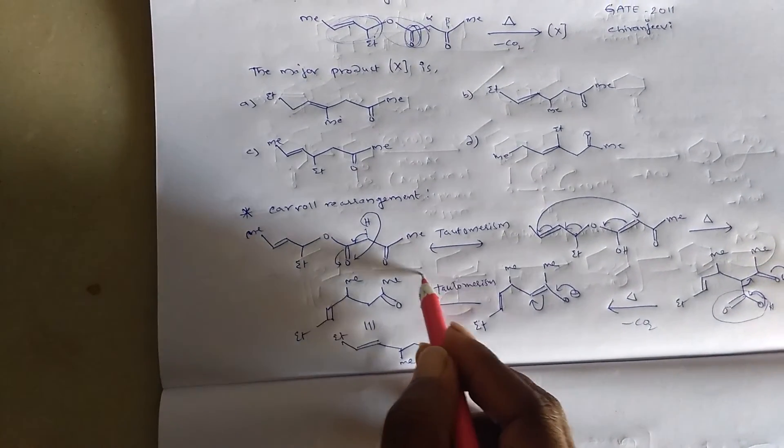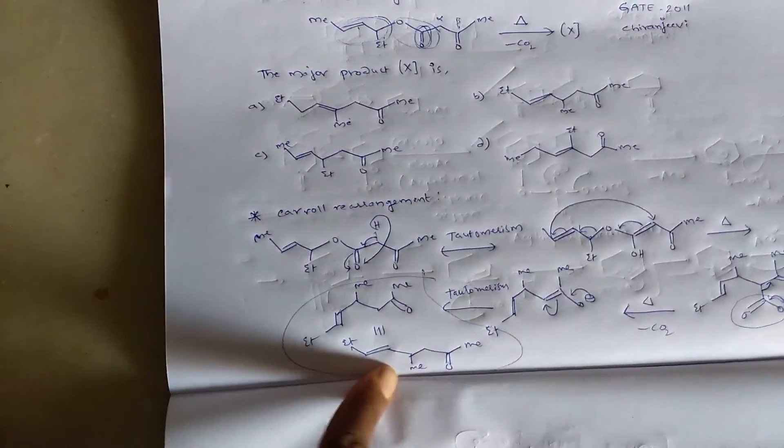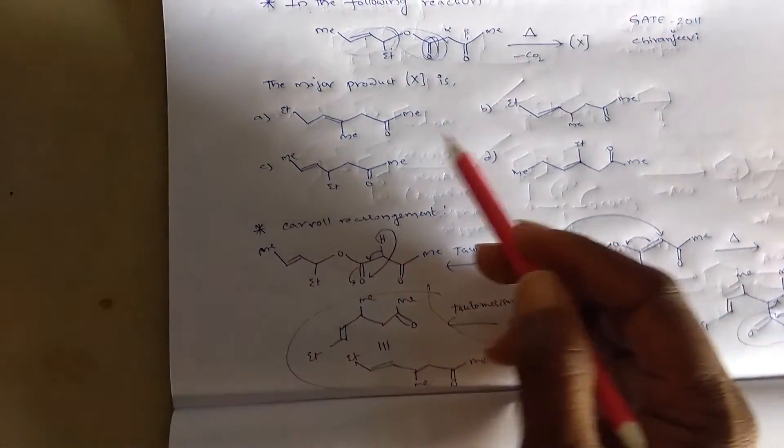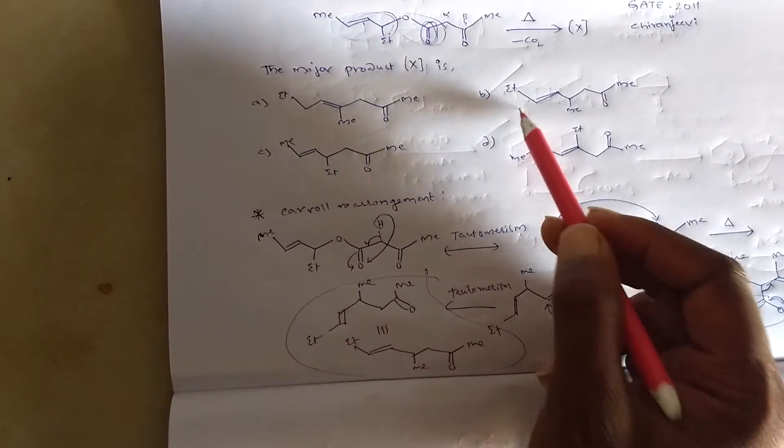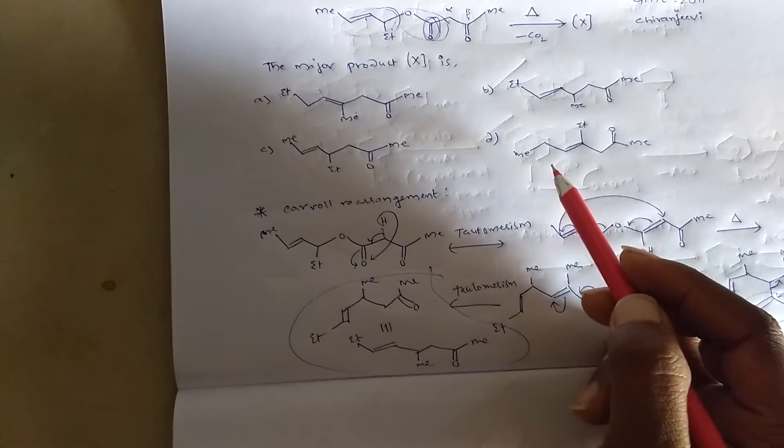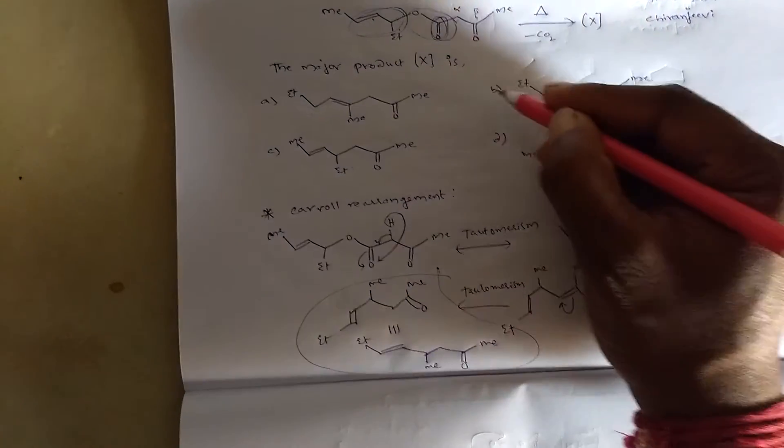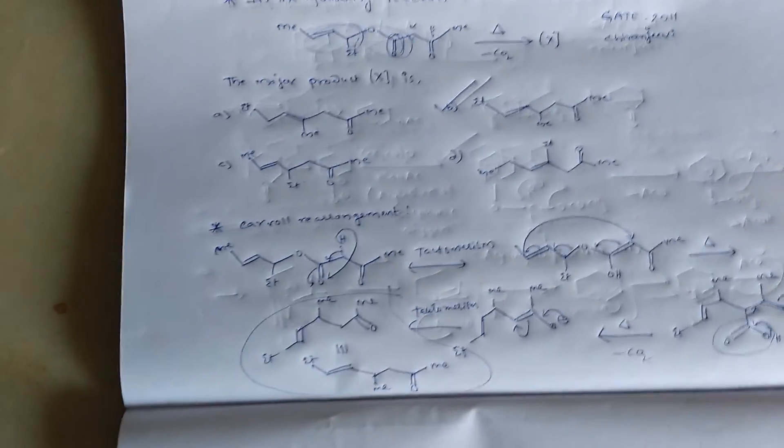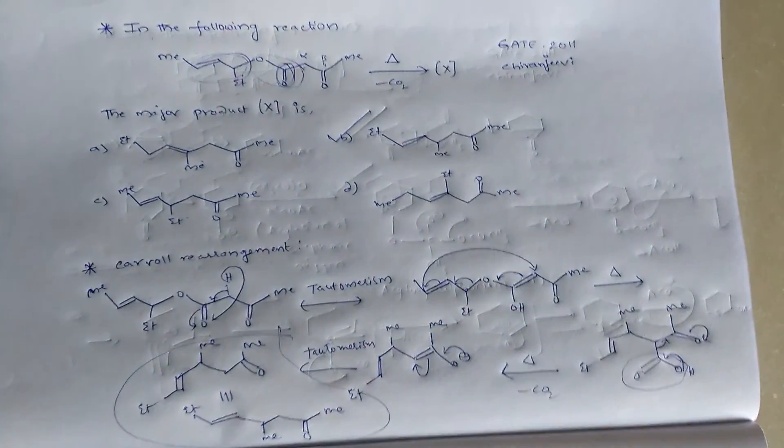Observe this product in the options. A, B, C, and D. And which one is the correct answer? B is the correct option for this Carroll's reaction.